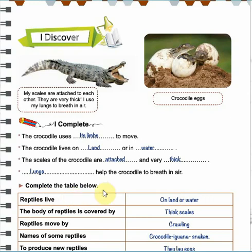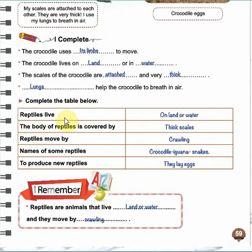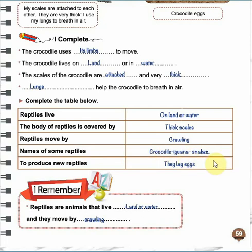Now complete the table below. We are going to talk about reptiles and their characteristics. Reptiles live on land or water. The body of reptiles is covered by thick scales. Reptiles move by crawling. We can name some reptiles: crocodile, iguana, snakes. To produce new reptiles — يعني to have new babies — they lay eggs.